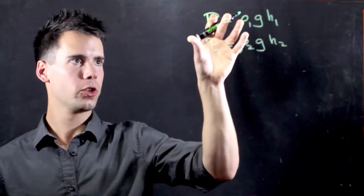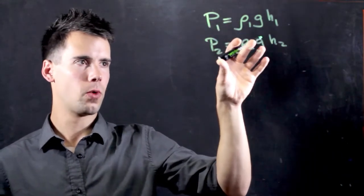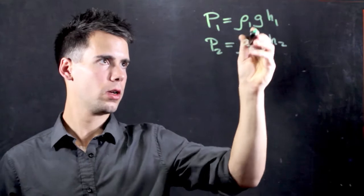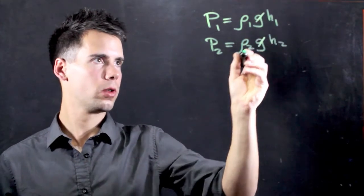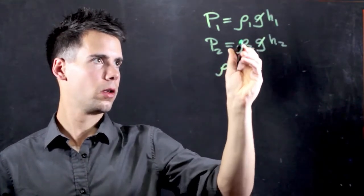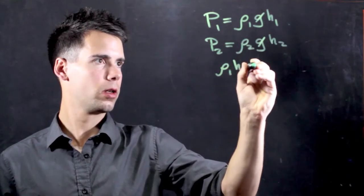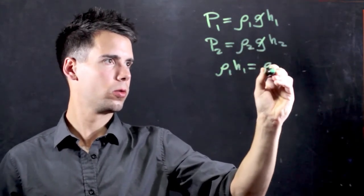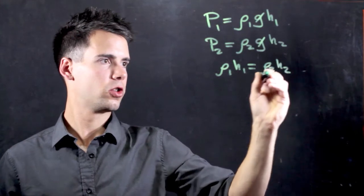And since the pressure is the same on Mercury as it is on water, we can equate these two. The G's will cancel and we find that Rho1H1 is equal to Rho2H2.